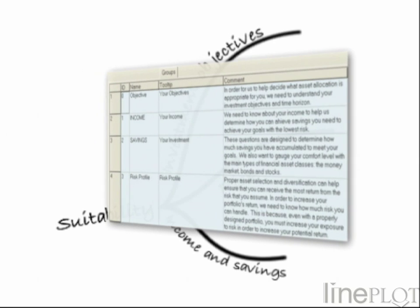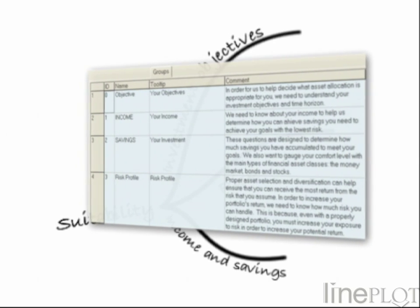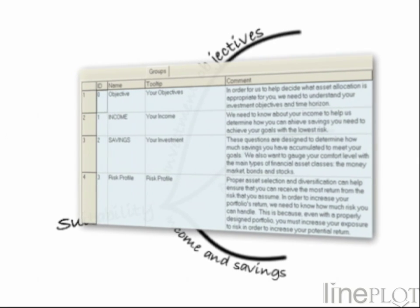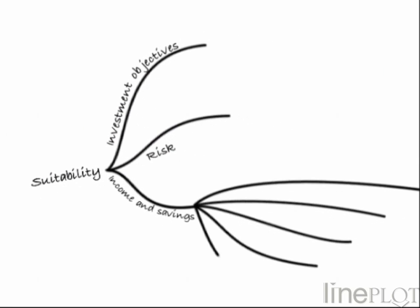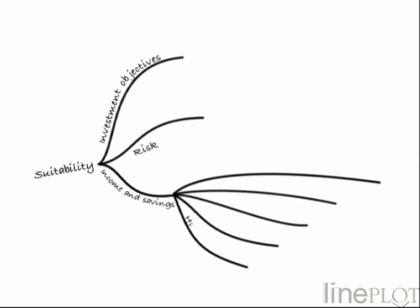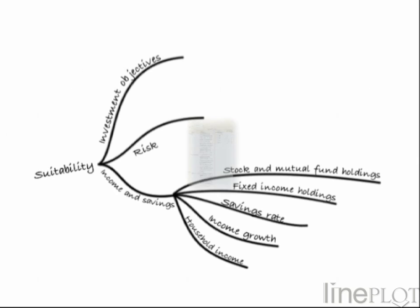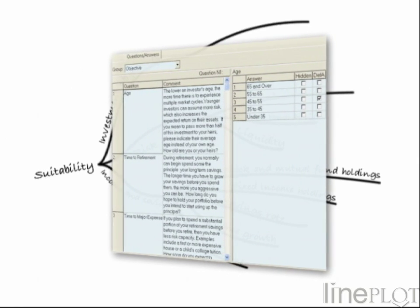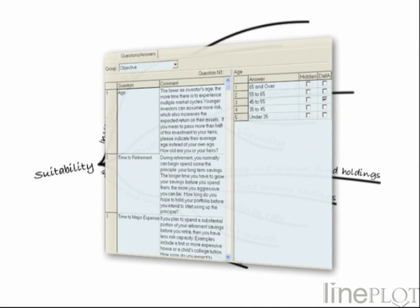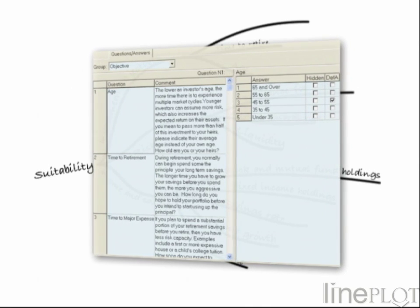The user interface lets the financial advisor set up and document these factor groups. Each of these levels can contain any number of factors, such as liquidity requirements or savings rate. Each factor is presented to investors in the form of a question. Using the system, a financial advisor can customise each factor, its questions and answers.